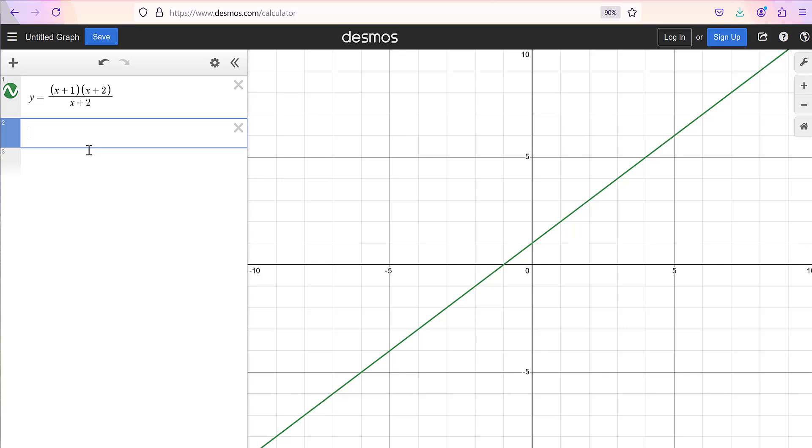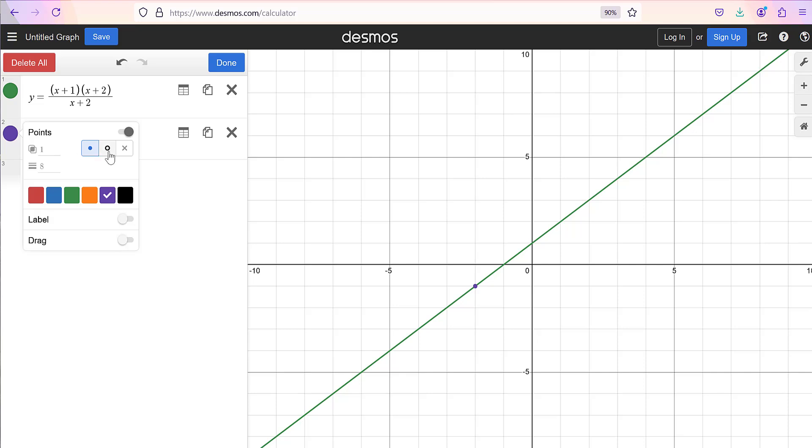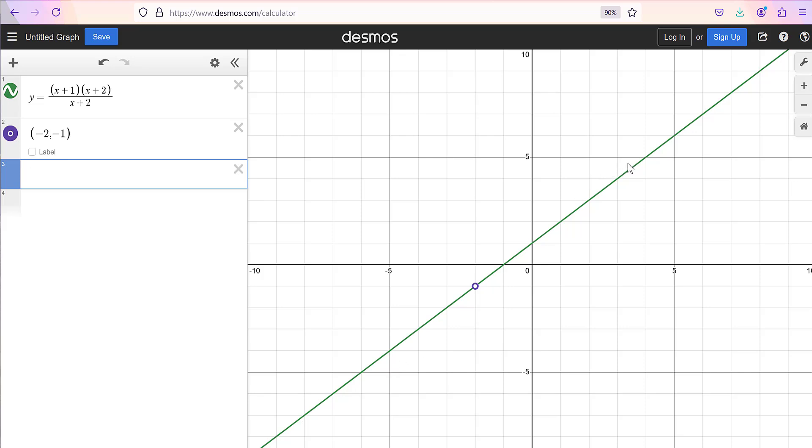So let's make that really obvious when we graph this. And so what I'm going to do here is I'm going to come down to another line in Desmos, and I'm going to plot the point negative 2, comma negative 1. And then I'm going to choose the type of circle I want to put there, which is an open circle, and I'm going to make it really big so it's obvious what it is. So now this graph looks really good. I can see that I've got all these points to the right and to the left.